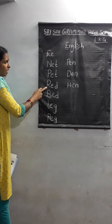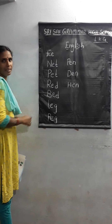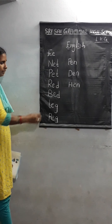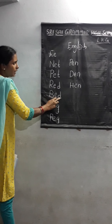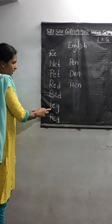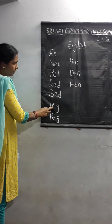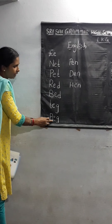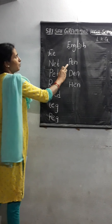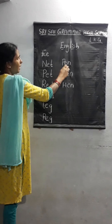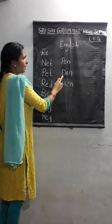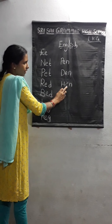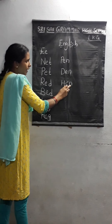Now next. R-E-D. Red. R-E-D. Red. Bed. L-E-G. Leg. P-E-G. Peg. P-E-N. Pen. P-E-N. Pen. H-E-N. Hen.